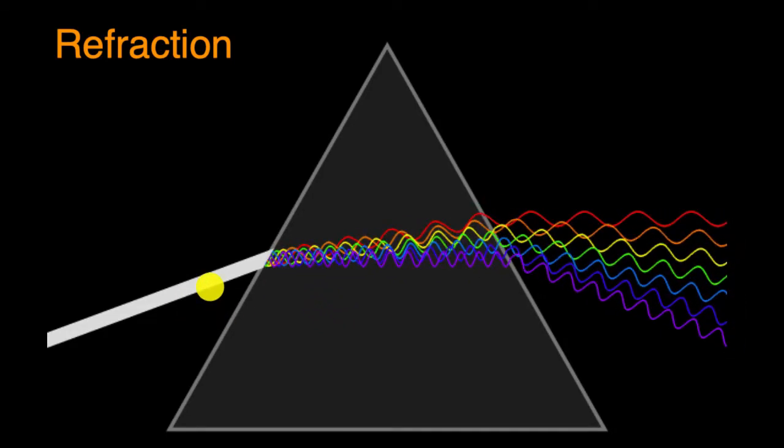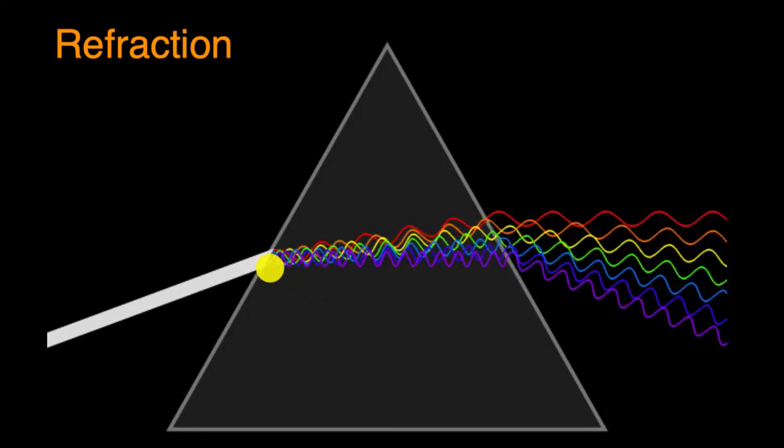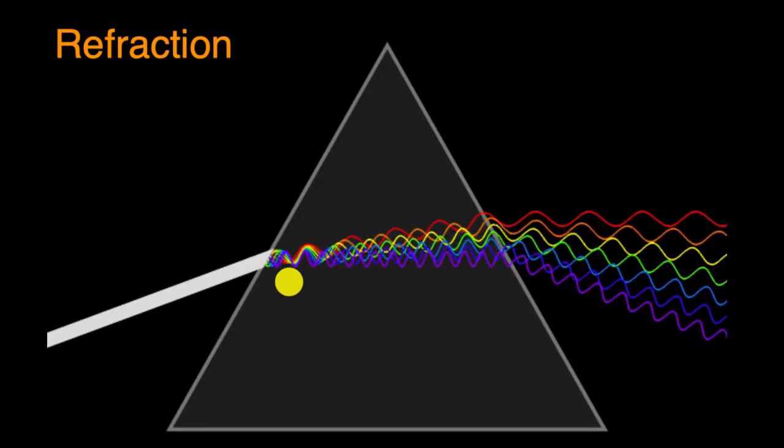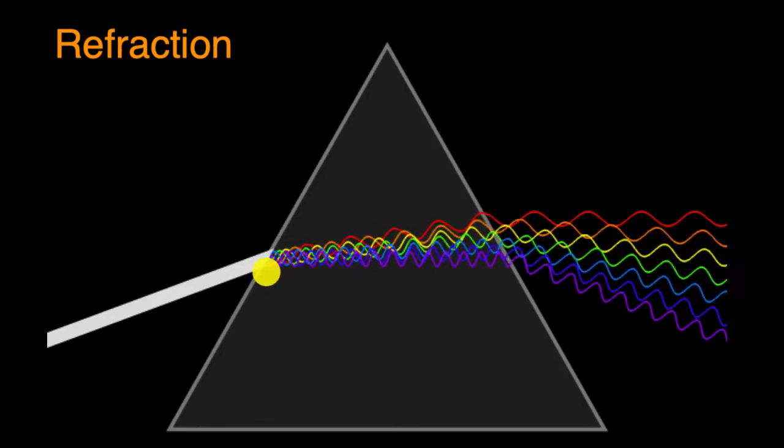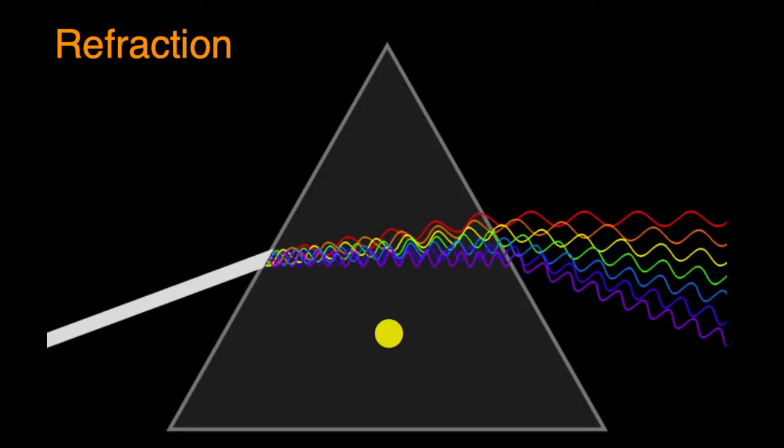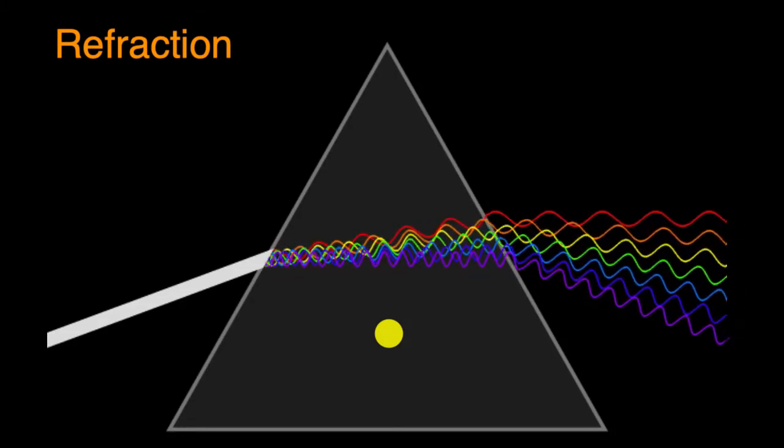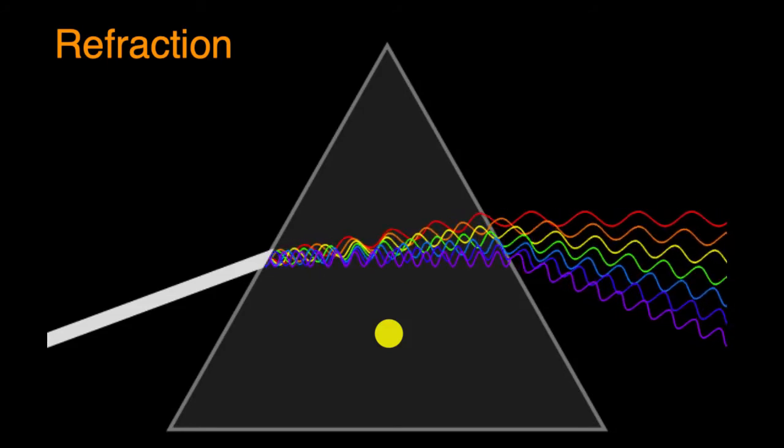This process of when light goes from one transparent medium to another or a vacuum to some other medium that it can travel through that's transparent, if it hits it at an angle, it can get bent, which is what we call refraction. This is why when you look at a cup of water or at a pool at an angle, you're not seeing directly through the pool. The image gets distorted.